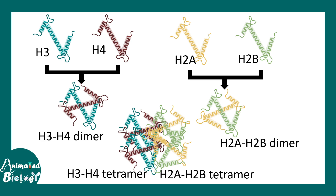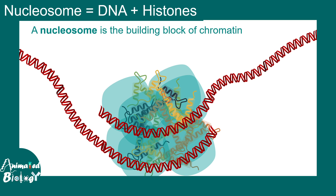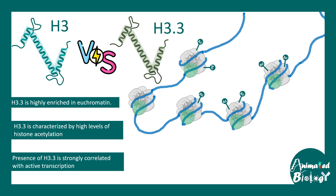Ultimately they assemble in the form of a tetramer. The H3-H4 tetramer and H2A-H2B tetramer together form the core histone octamer, and this octamer is wrapped around by DNA — that is called the nucleosome, the fundamental unit of chromatin.